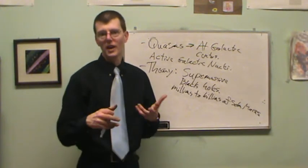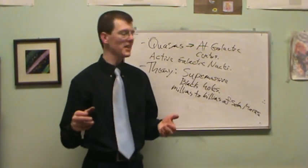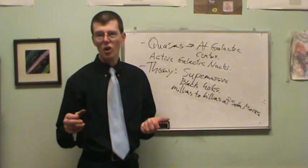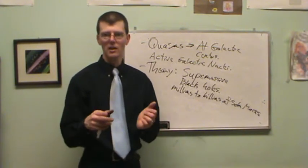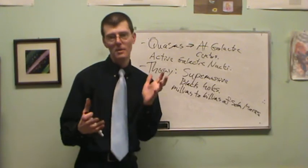I mean, the most massive star has, what, 100, 200, 300 times the mass of the sun? That's nowhere close to millions. So how do you make a black hole that big? Well, if you take a little one and feed it, maybe that can work.